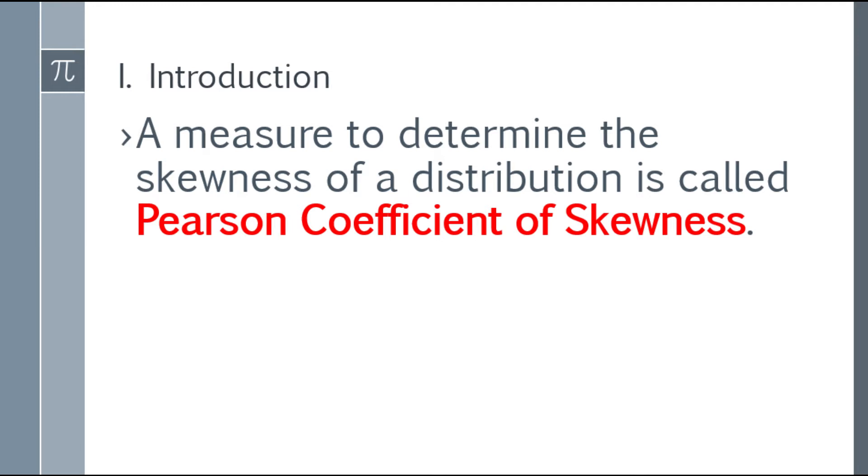Introduction: a measure to determine the skewness of a distribution is Pearson coefficient of skewness. Okay, now let's have the formula.